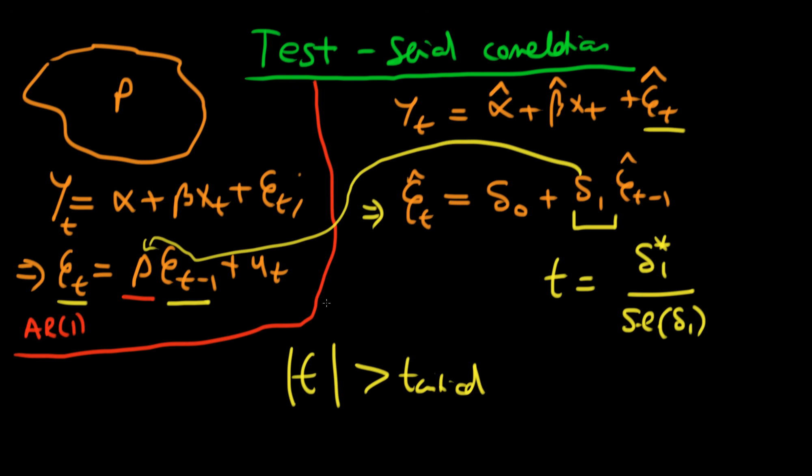What do we mean by the null hypothesis? The null hypothesis is that rho equals zero in the population, and the alternative hypothesis is that rho does not equal zero. The null hypothesis means no serial correlation, and the alternative means serial correlation.